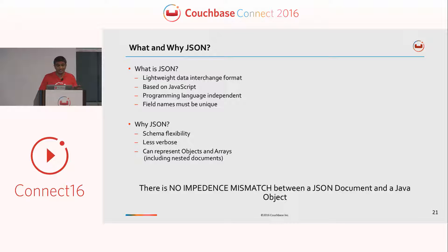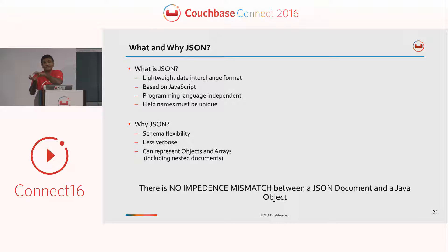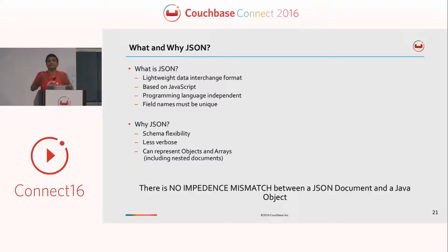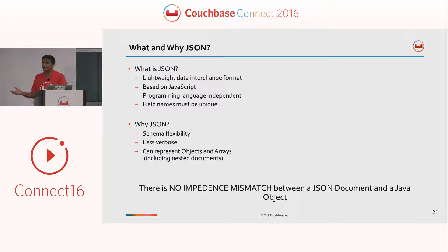Very important: there's no impedance mismatch between a JSON document and a Java object. You can just take a JSON document and cast it to your Java object — that's the biggest advantage. While if you're working with a relational database, you need a middle layer that converts a table row to a Java object, like Hibernate or some kind of ORM tool. Here, there's no impedance mismatch — your JSON object gets converted to your Java object directly.